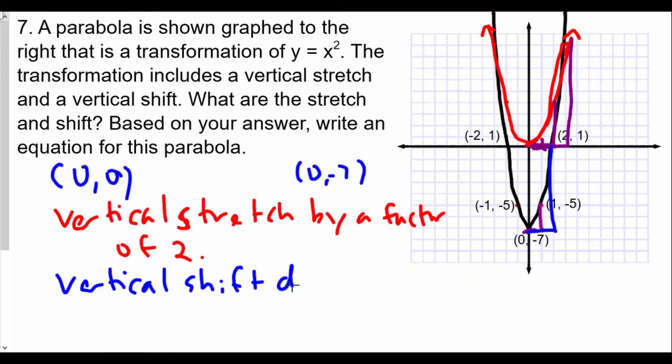down by seven, because after we stretch this vertically by two we're going to shift everything down by seven. Which means our final function is going to be y is equal to two times x squared and minus seven.